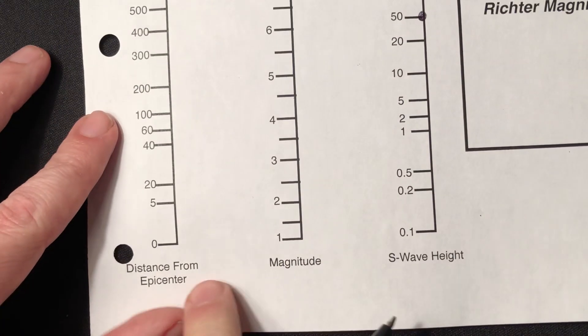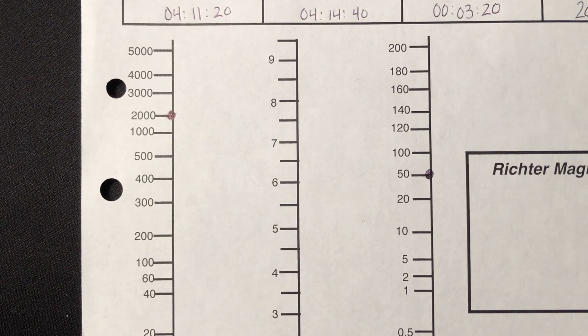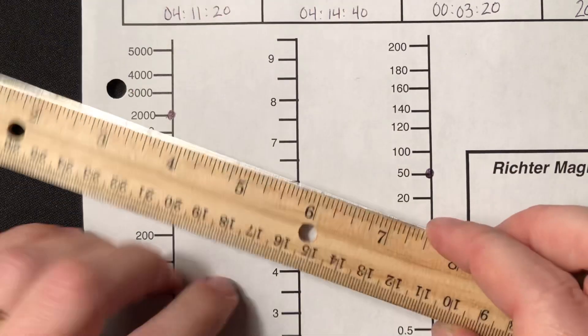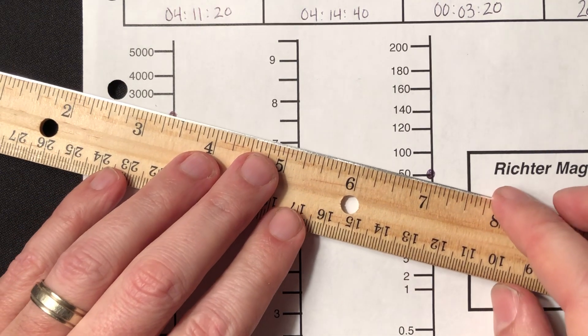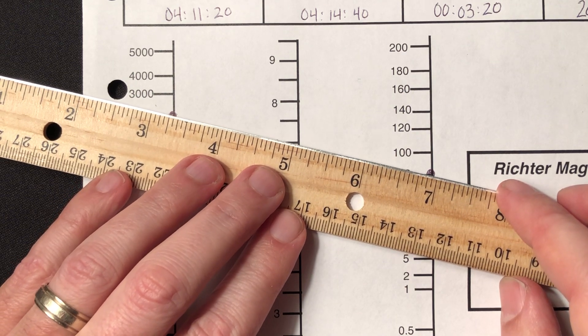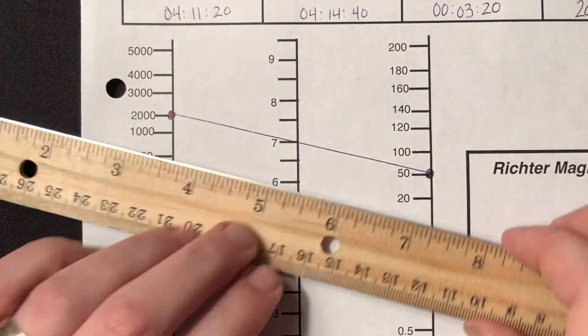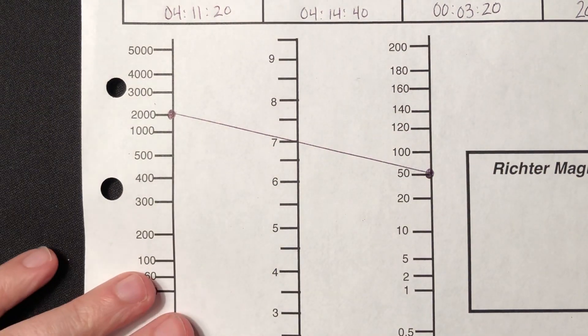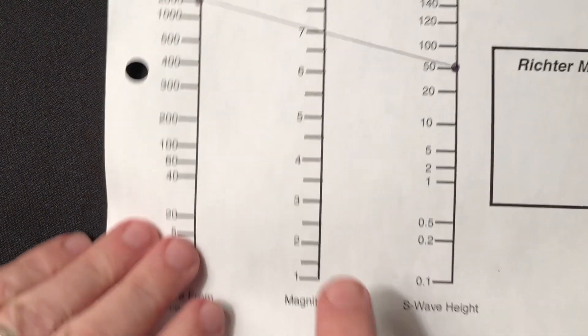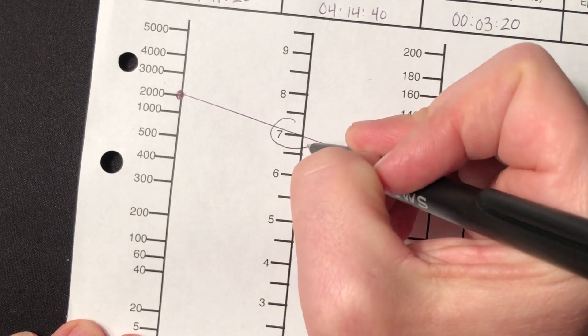So I did my epicenter distance and my S-wave height. What I'm going to do now is I'm going to connect them. This was a pretty good-sized earthquake, the 2010 Chilean earthquake. So if I take that, it was about a 7 on the Richter scale. So if I take that and I go through and I mark, connect, you can see that my line, wherever my line intersects my Richter magnitude scale, where it intersects it, that is going to be the magnitude.